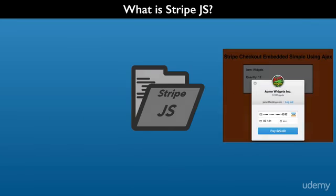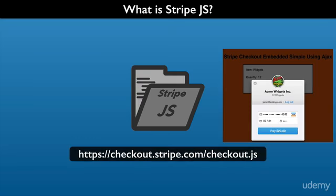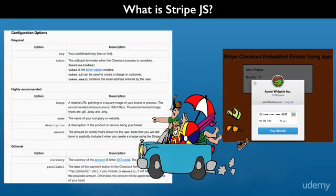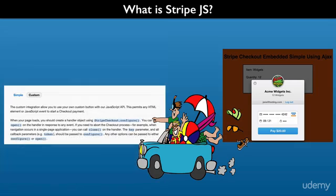StripeJS is the JavaScript library used for the Stripe checkout form. It is the checkout JavaScript file that downloads from Stripe. We will look at how to use it with our own JavaScript. StripeJS provides options to configure the checkout form and we can capture data from the form when it closes, and it provides an easy-to-use interface of methods that we can call.